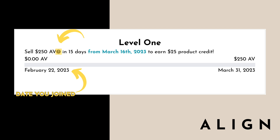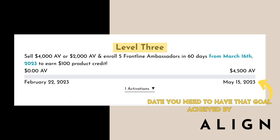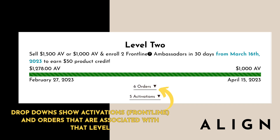You'll also see what the goal is, information about the goal if you have any questions, and the date you need to accomplish that goal by. As you can see here, it shows you have to achieve the Level 3 goal by May 15th. The drop-down menu underneath your bar will show you your orders and activations that count towards that level goal.